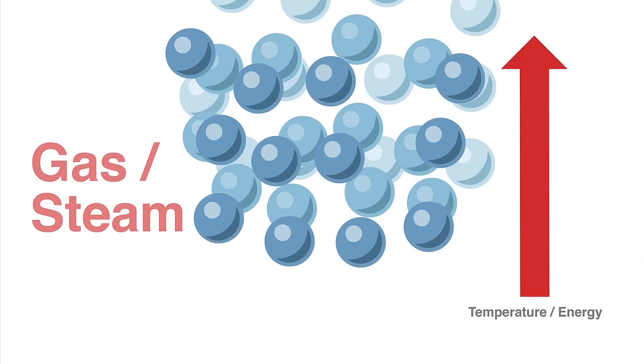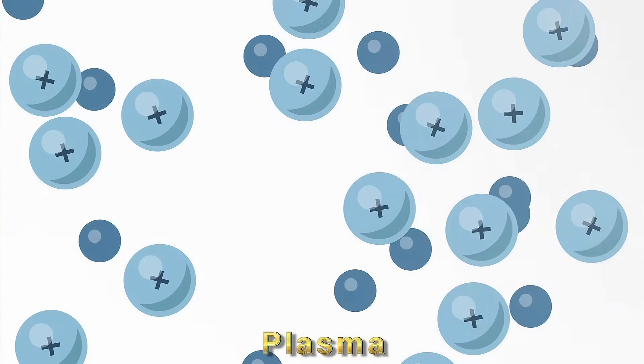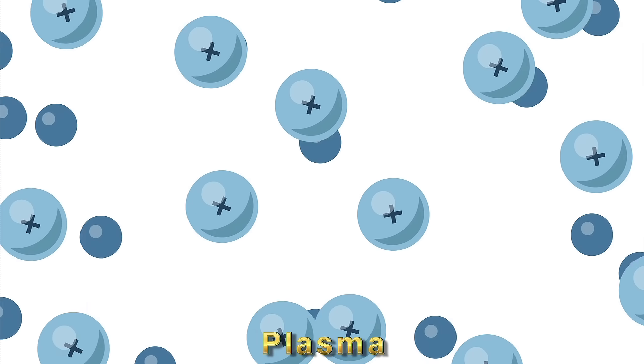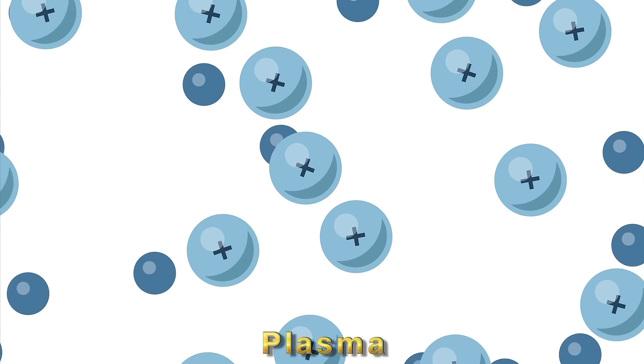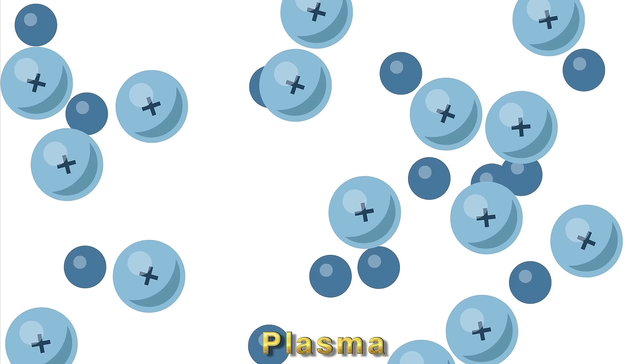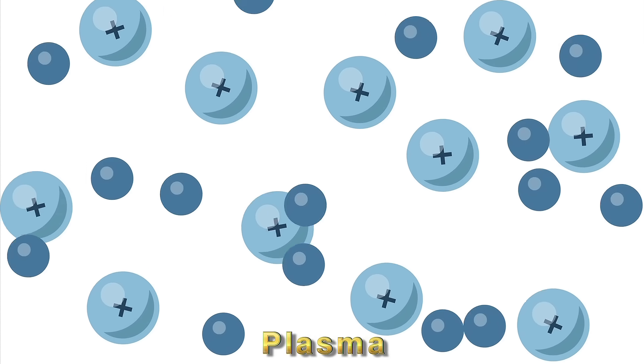If you could heat it to 11,700 degrees Celsius, the steam would break up into a number of component gases. It would also become electrically conductive or ionized. This high energy ionized gas is called plasma.